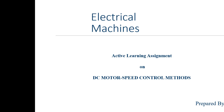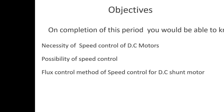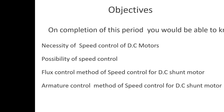Hi all, this is E. Manjula, lecturer in Electrical, Government Institute of Electronics, Kindrabad. Today we will see the speed control methods of DC motors. The contents we will cover are: the necessity of speed control of DC motors, possibility of speed control, field control method of speed control for DC shunt motor, and armature control method of speed control for DC shunt motor. On completion of this session, you should be able to understand all four of these contents.